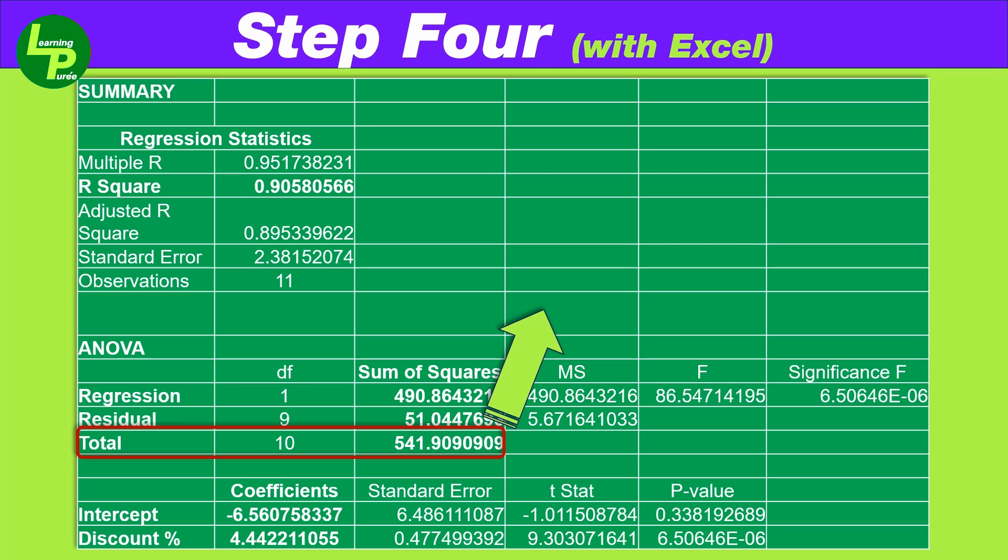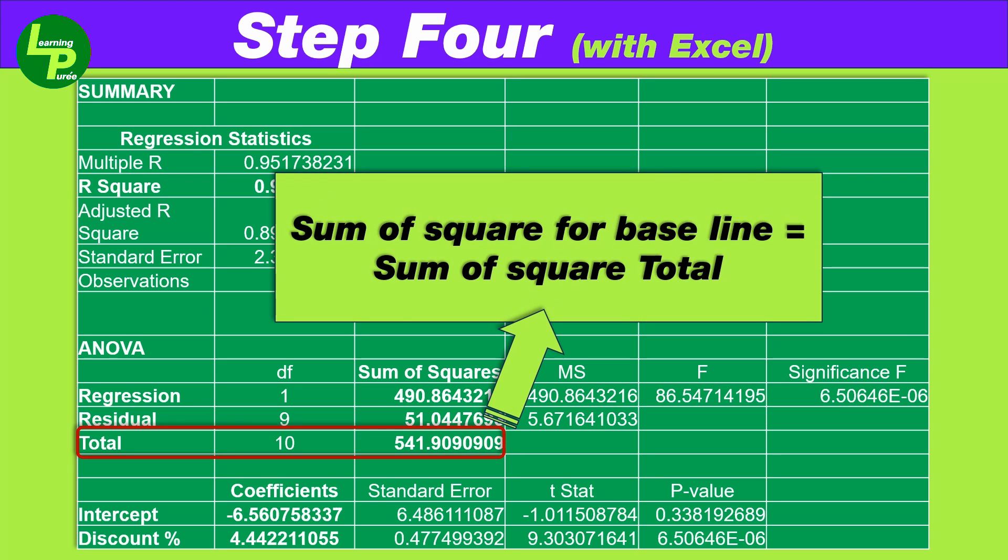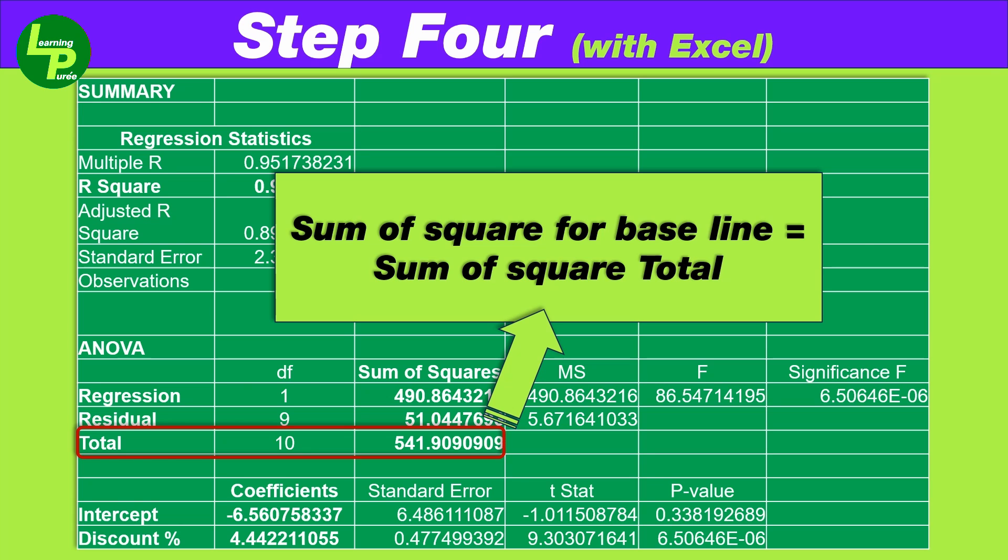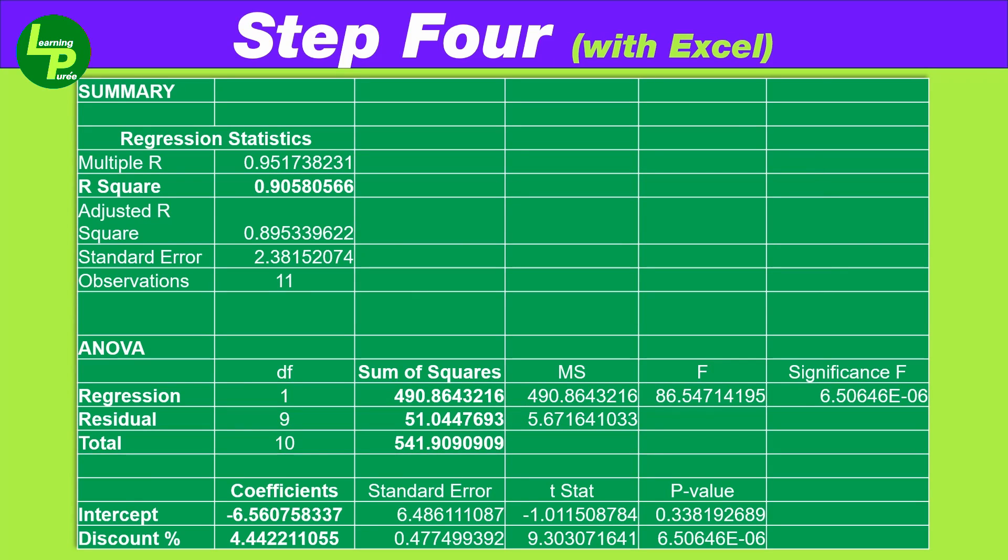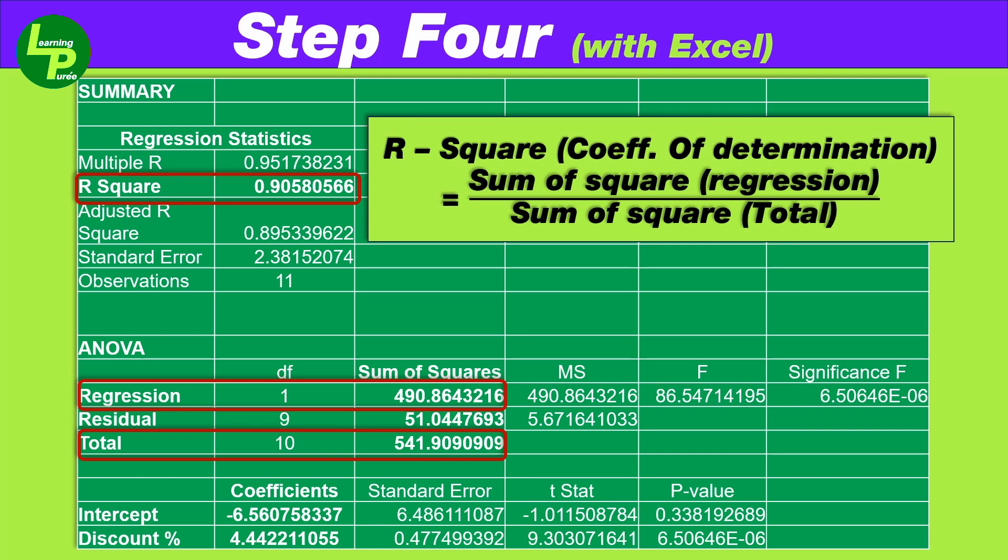If you remember, this is the value from where we started the exercise for identifying the best fit regression line. Therefore, we refer to this sum of squares as the sum of squares total. Seventh, if we divide the sum of squares of regression by the sum of squares of the total, we get the coefficient of determination which is 0.9058 as seen in the output table.